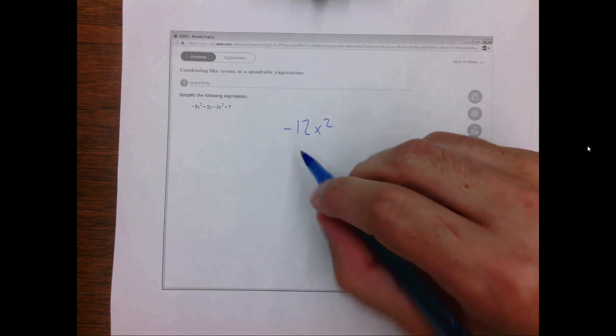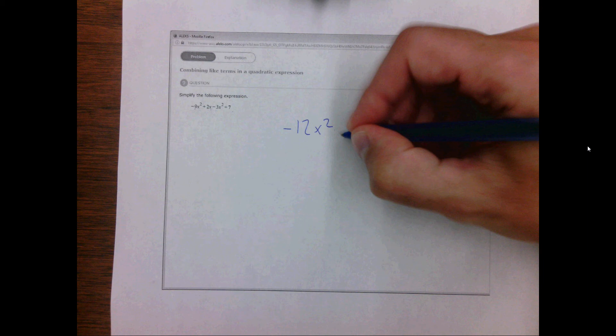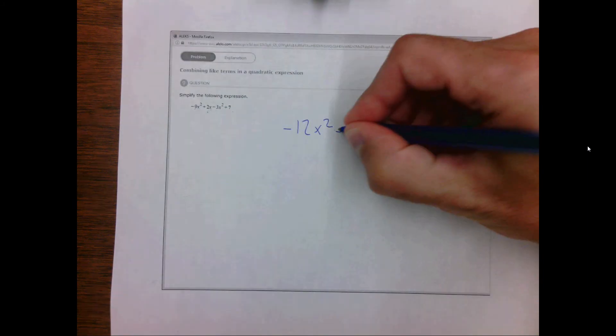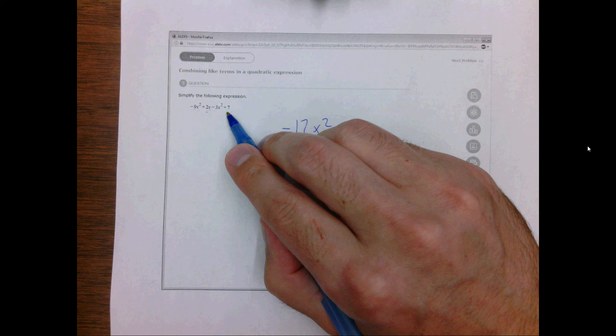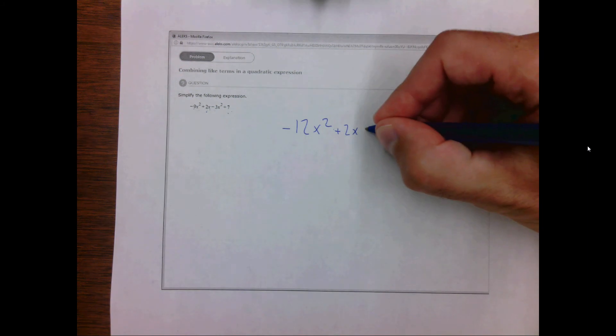Traditionally you put the x squared term first, followed by the x term which has not changed, plus 2x, followed by the number that is not multiplied by any variable, in this case plus 7.